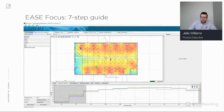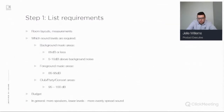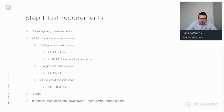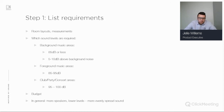The first step in the seven-step guide is to list all the requirements for the project. First, determine the size and layout of the room — get all the measurements. You can also import a floor plan and based on that add speakers and areas. Then determine which sound levels are required.